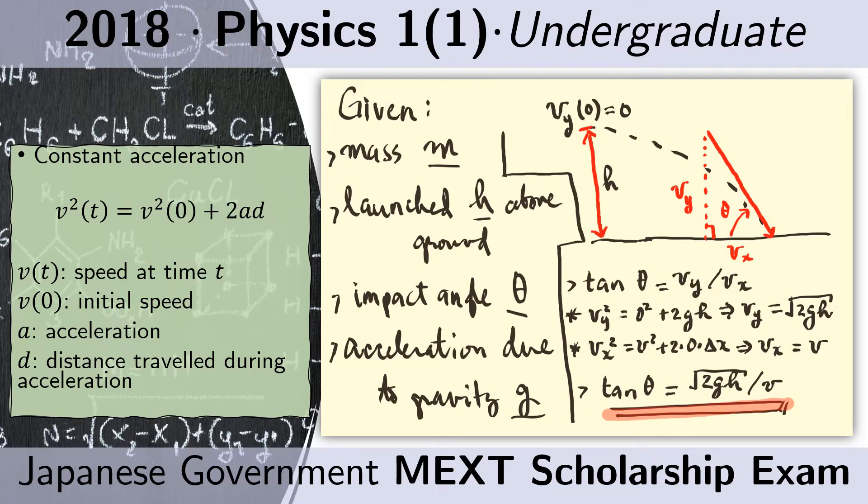The problem asks us to find the tangent of the angle of impact. So the angle of impact is the angle that the velocity vector makes with the horizontal.